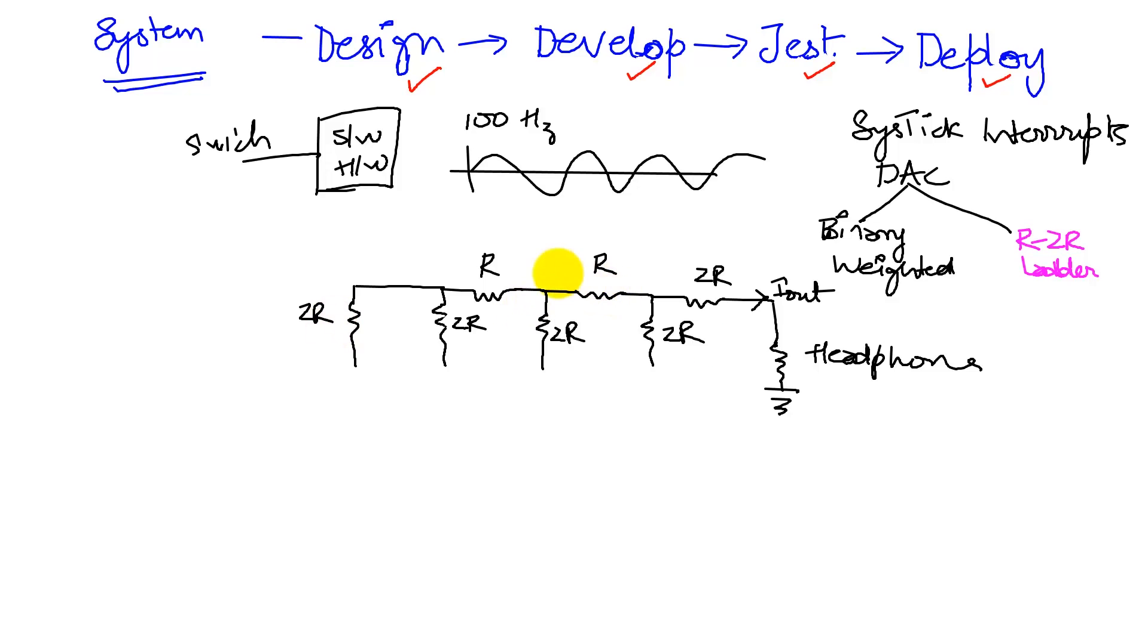And so if let's say we picked our R to be 11K, and that's a good choice because of the way our voltages work, and so the 2R is gonna be simply a 22K.